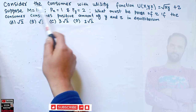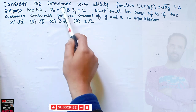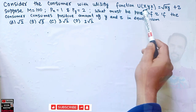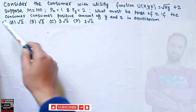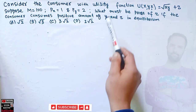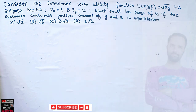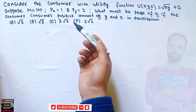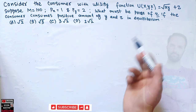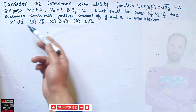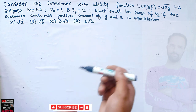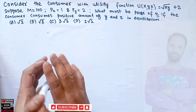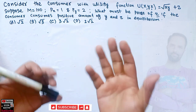Suppose the income of the consumer is 100 dollars, price of x is 1 dollar, price of y is 2 dollars. What must be the price of z if the consumer consumes a positive amount of y and z in equilibrium? We have to find the price of z. The options are √2, √3, 3√2, or 2√2.